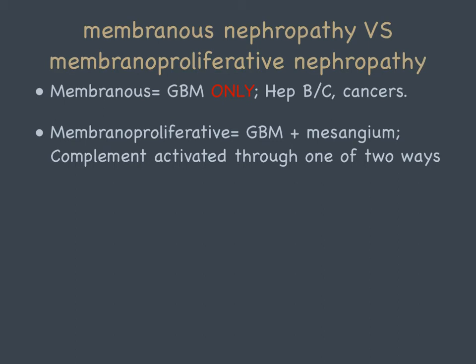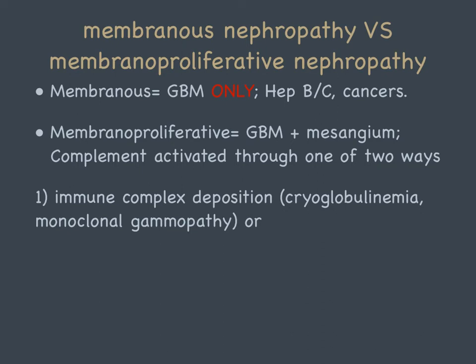The two types of membranoproliferative are: immune complex deposition, seen in cryoglobulinemia and monoclonal gammopathy; and an inherited C3 defect. Hepatitis B and C associations with kidney disease are high yield. Cryoglobulinemia is seen in hepatitis C — and since both start with C, hep C has a strong association with membranoproliferative. So if you see GBM and mesangium involved, that has a stronger association with hep C than hep B.